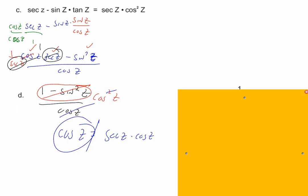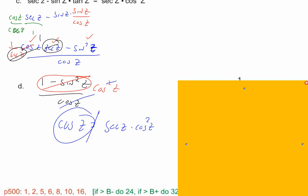Finishing the right side: change the secant to 1 over cosine, and the cosines divide out. Now I like it a whole lot better. Cosine z equals cosine z — beautiful!